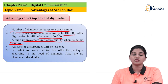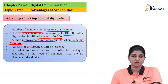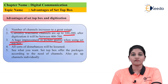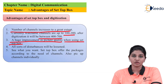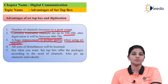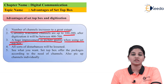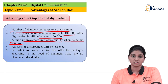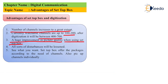The next advantage is related to the interference of noise. As the signals are transmitted in the form of digital signals, there will be less effect of noise as compared to analog signals, because analog signals are affected more by noise than digital signals. Therefore, all sorts of distortion will be less in the case of set-top box because it basically receives digital signals.